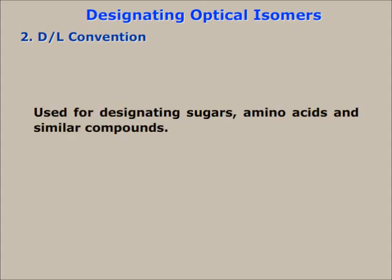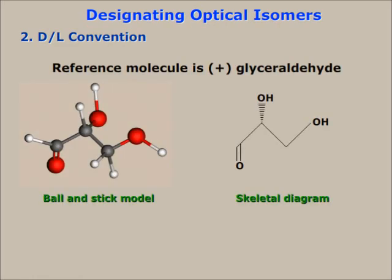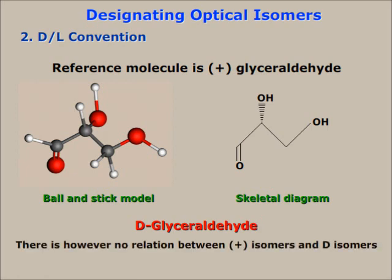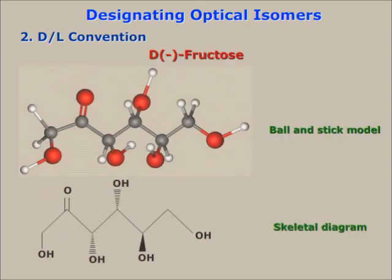Number two: the D/L convention. It is used for designating sugars and amino acids and similar compounds. In the D/L convention, the reference molecule is plus-glyceraldehyde, which was called D-glyceraldehyde. This does not however by any way mean that all D-isomers of every molecule are dextrorotatory. In fact, many D-isomers have been found to be levorotatory — for example, D-fructose.